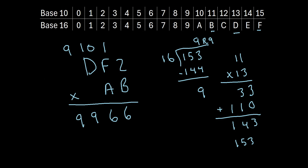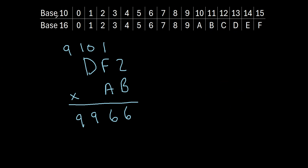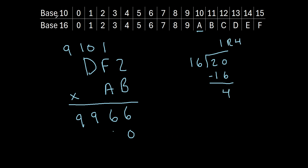Now we move on to multiplying by A. First, put a zero placeholder here. A times 2 — remember, A is equal to 10 — so we have 10 times 2, which is 20. Since 20 is greater than 16, we ask how many 16s go into 20. Just 1. So 1 times 16 is 16, and 20 minus 16 is 4. We get 1 with a remainder of 4. The remainder 4 is written here, and we carry the 1 to the next column.